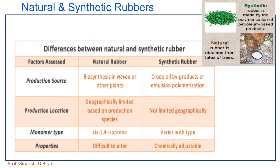Now let us look at the difference between natural and synthetic rubber. Natural rubber is obtained from latex — the white liquid present in rubber trees, biosynthesized in Hevea or other plants. Synthetic rubber's source is crude oil byproducts or emulsion polymerization. Regarding production location: natural rubber is geographically limited based on the producing species, but synthetic rubber is not limited geographically.